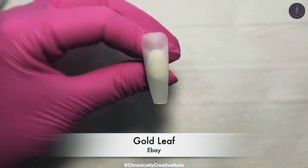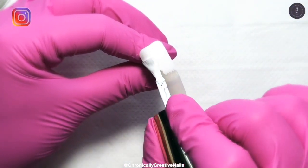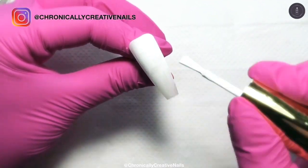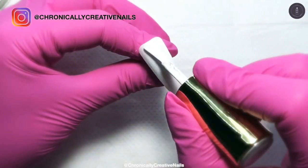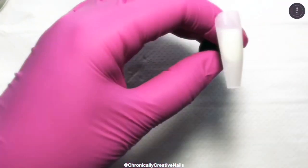And I'm using some gold leaf that I bought from eBay. So first off I'm going to go in and give this two coats of white. I shall be doing that on three nails and on another two I'll be doing two coats of black.